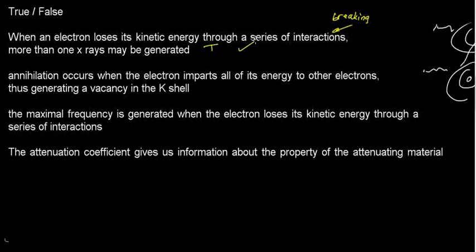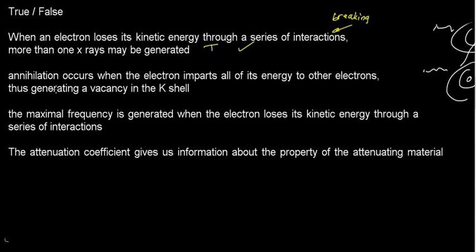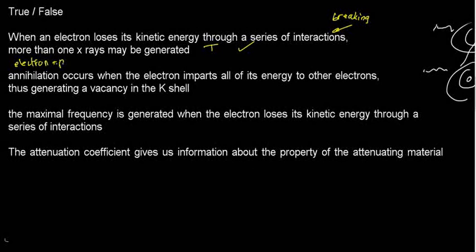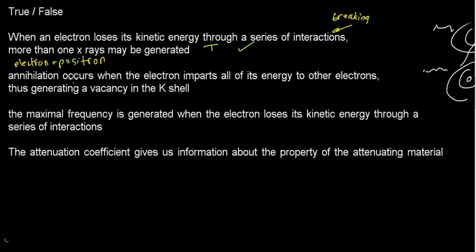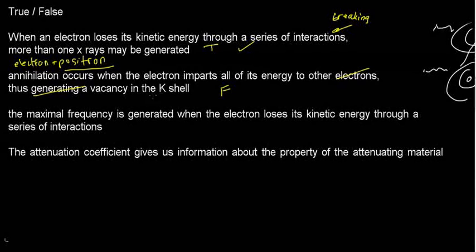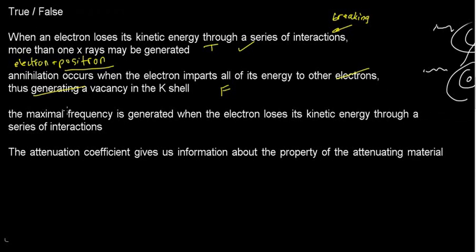Reading it again: 'When an electron loses kinetic energy through a series of interactions, more than one X-ray may be generated' — I would agree with that. Next: 'Annihilation occurs when the electron imparts all of its energy to other electrons, thus generating a vacancy.' Annihilation really means a pair of electron and positron, so since there's no mention of the positron, this should ring false right away. I'm going to mark it false.